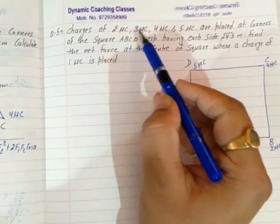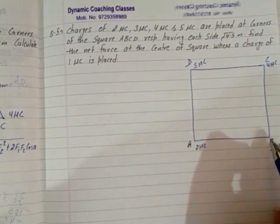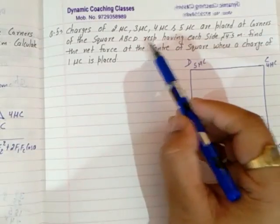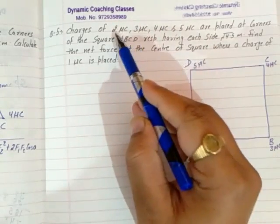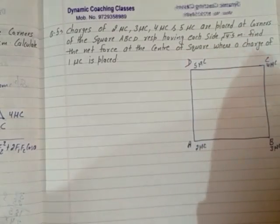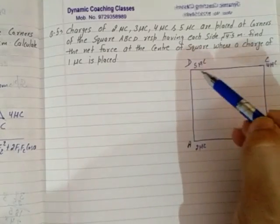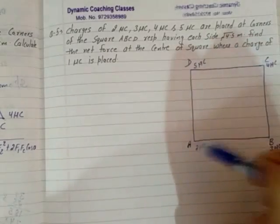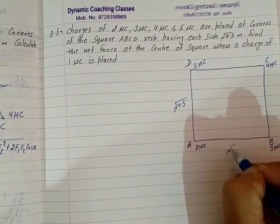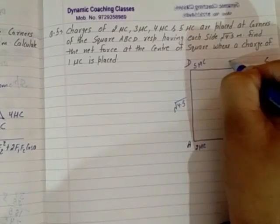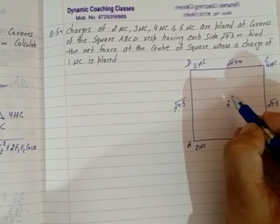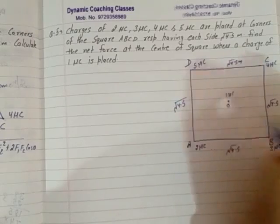So A, B, C, D has charges 2, 3, 4, and 5. Each side of the square is root 4.5. This is O at the center, and here we need to find the net force. One microcoulomb charge is placed at the center O.